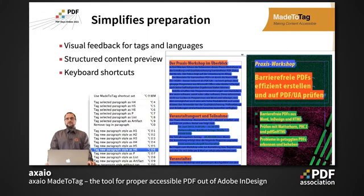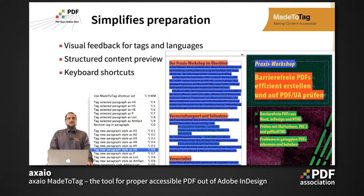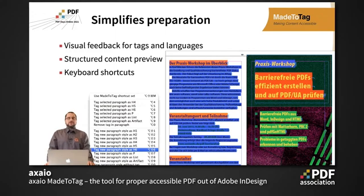As you can see here, you have an InDesign document where all the paragraphs are highlighted in blue, all the headings in orange in different tones so you can see the heading structure, and lists highlighted in green. It also has a structured content preview so you can check if the output will generate the correct reading order in your tagged PDF.